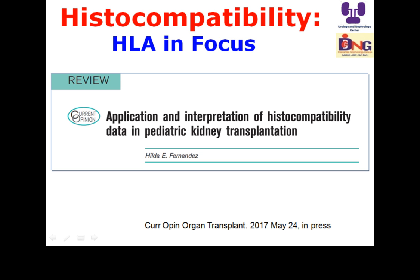There are nine primary MHC class 2 genes: HLA-DPA1, DPB1, DQA1, DQB1, DRA, DRB1, DRB3, DRB4, and DRB5. These class 2 molecules also consist of two chains, alpha and beta, with HLA variability in the peptide binding region of the alpha-1 and beta-1 domains. Class 2 HLA proteins are expressed on antigen-presenting cells such as macrophages, B cells, and dendritic cells. HLA proteins are expressed from two alleles with a high degree of HLA genetic polymorphism.